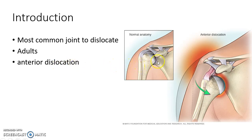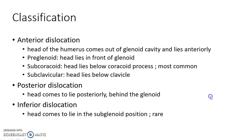This picture shows the normal anatomy of the shoulder joint, and this picture shows a dislocated shoulder. Shoulder dislocation can be divided into anterior dislocation, posterior dislocation, and inferior dislocation.